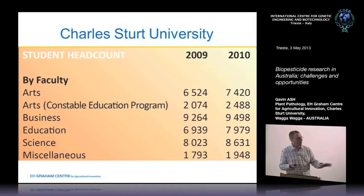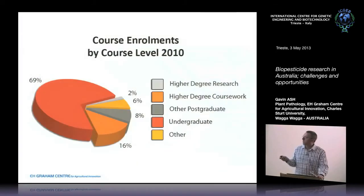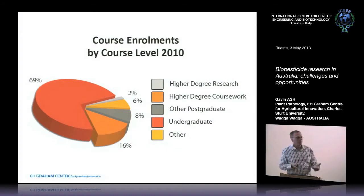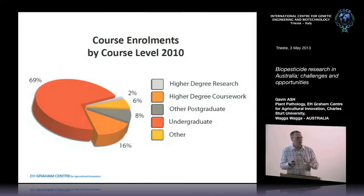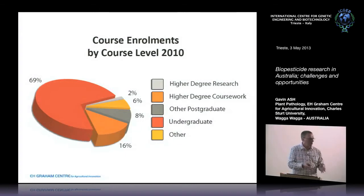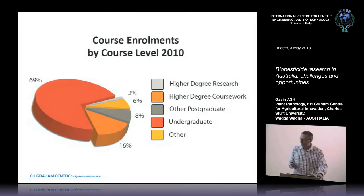Breaking down some of our courses: large numbers are undergraduates doing their first degree — 69%. A small number are doing higher-degree research. But in science and in agriculture and wine science, where I'm from, we have the largest numbers of students.